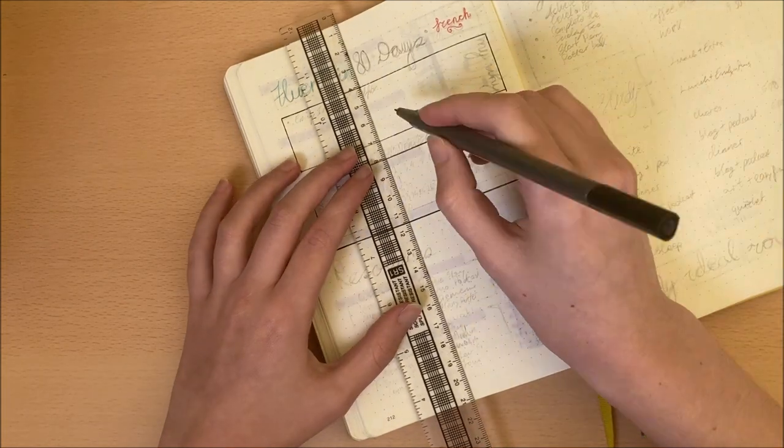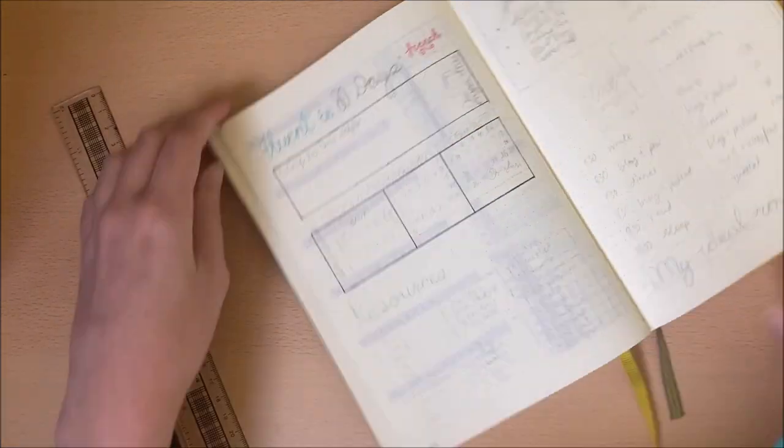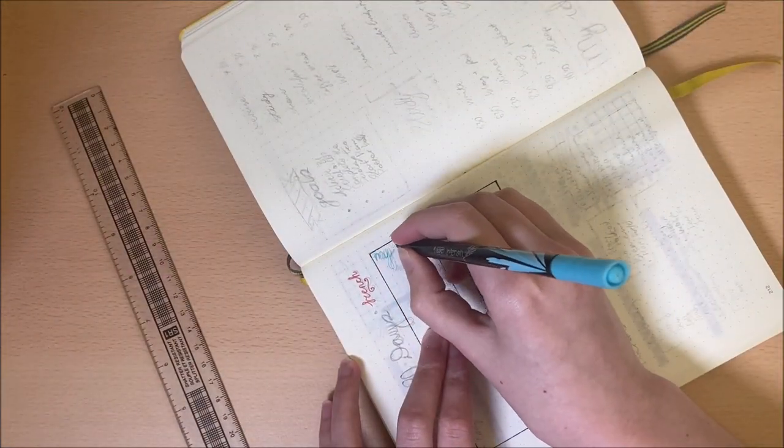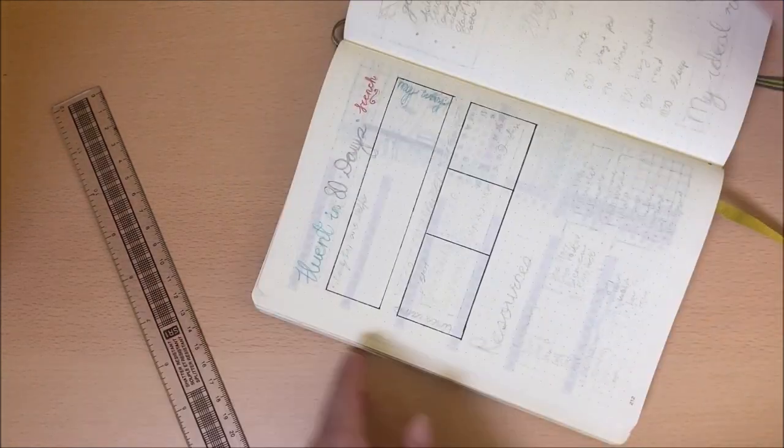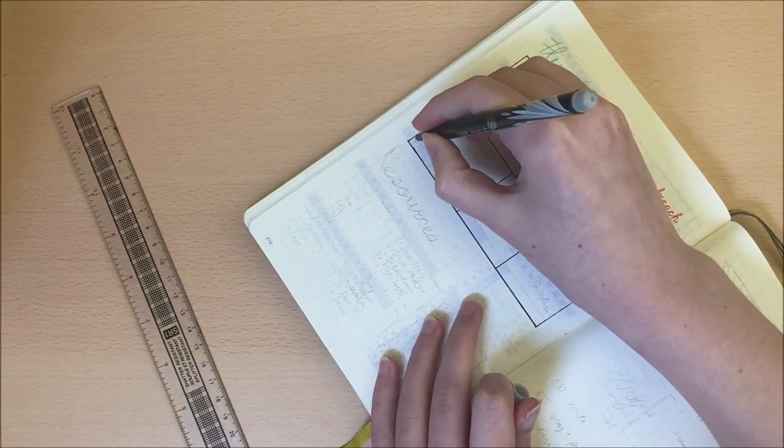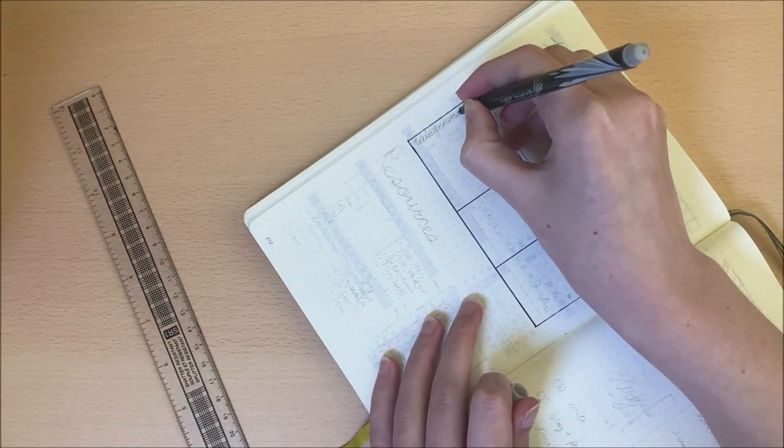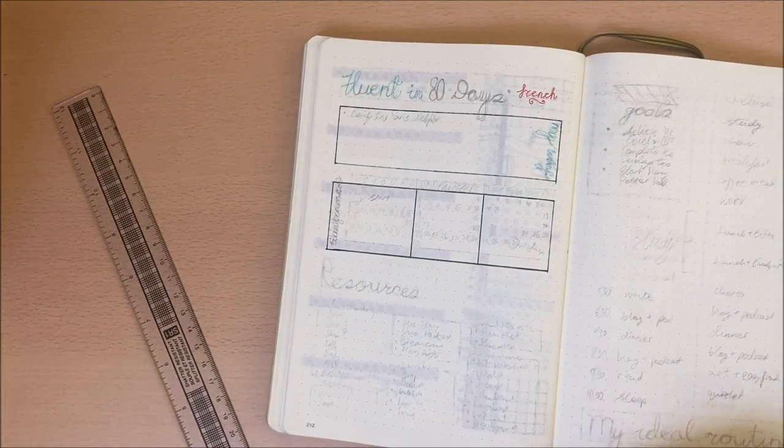So the first two things I'm setting up is my Y box, which is my motivation for learning this language, and then the three smaller boxes are going to be used to track the 80 days over which I'm doing this challenge.